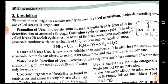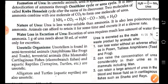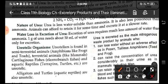Now ureotelism: the elimination of nitrogenous waste as urea is called ureotelism, and the organisms are known as ureotelic. Ureotelic animals synthesize urea in liver cells for detoxification of ammonia through the ornithine cycle or urea cycle, also called Krebs-Henseleit cycle after the name of its discovery. Two molecules of ammonia combine with carbon dioxide to give one molecule of urea and water. Urea is less soluble than ammonia and requires about 15 millilitres of water for dissolving. Ureotelic animals include amphibians, terrestrial mammals, cartilaginous fishes and reptiles.